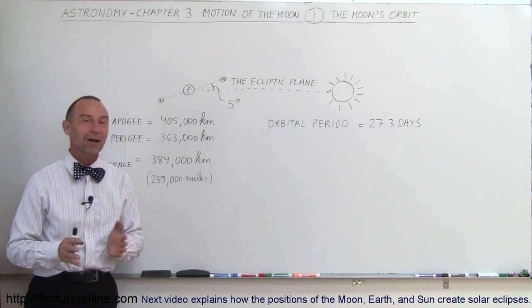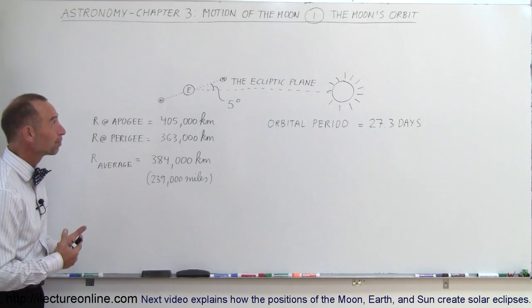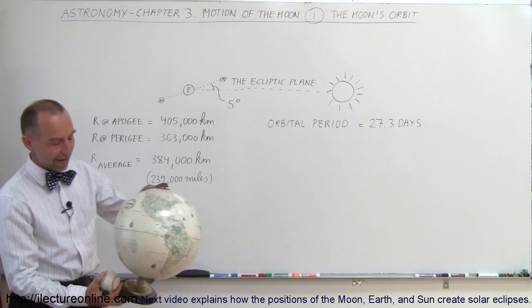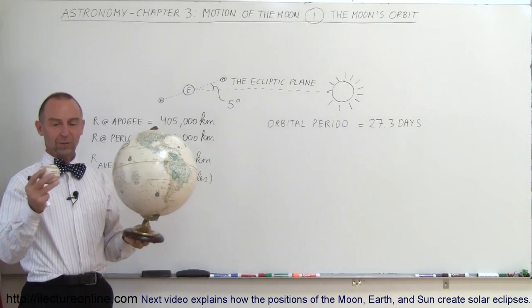Welcome to ElectronLine and now let's talk about the Moon and the motion of the Moon. The Moon is, of course, the Earth's only satellite and if this is our Earth, this would be the Moon.